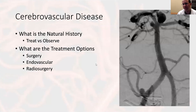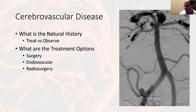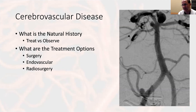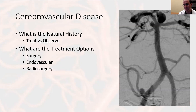A very important principle when looking at cerebrovascular disease: anytime you see a problem, you take a step back and ask what is the natural history of this problem. That will predicate whether you watch the problem or treat it. Then, if you decide to treat it, what are the treatment options? There are always surgical options, endovascular options, and for some cerebrovascular pathology, radiation is also an option.